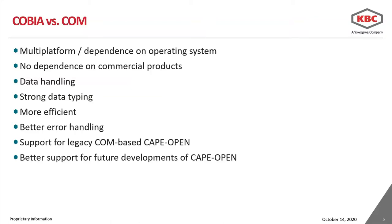Another advantage of COBIA over COM is in data handling. In COM, one has to know which data is owned and which are references to data owned by some external component, and if you get this wrong you will either be leaking memory or crashing the application. There are also a number of issues resulting from weak typing, including the possibility of passing the wrong data type or receiving the wrong data type, and poor performance because you must repeatedly make such checks. Whereas in COBIA, data types are passed as interfaces and data is strongly typed, which makes the behavior of operations more predictable and efficient compared to COM.